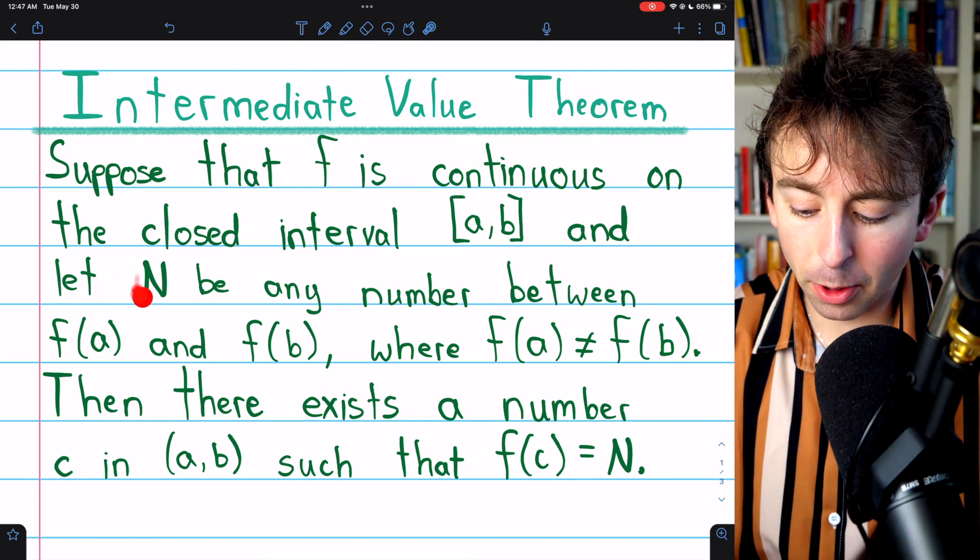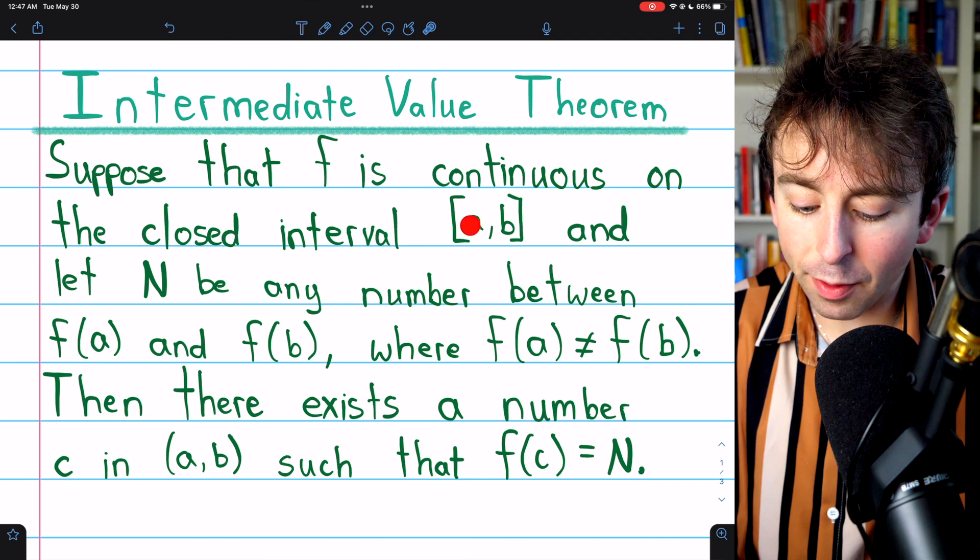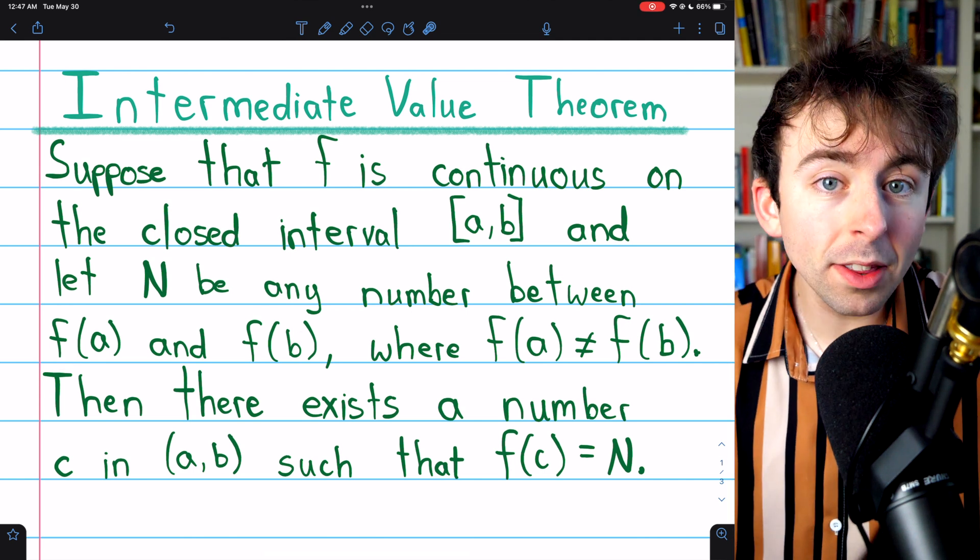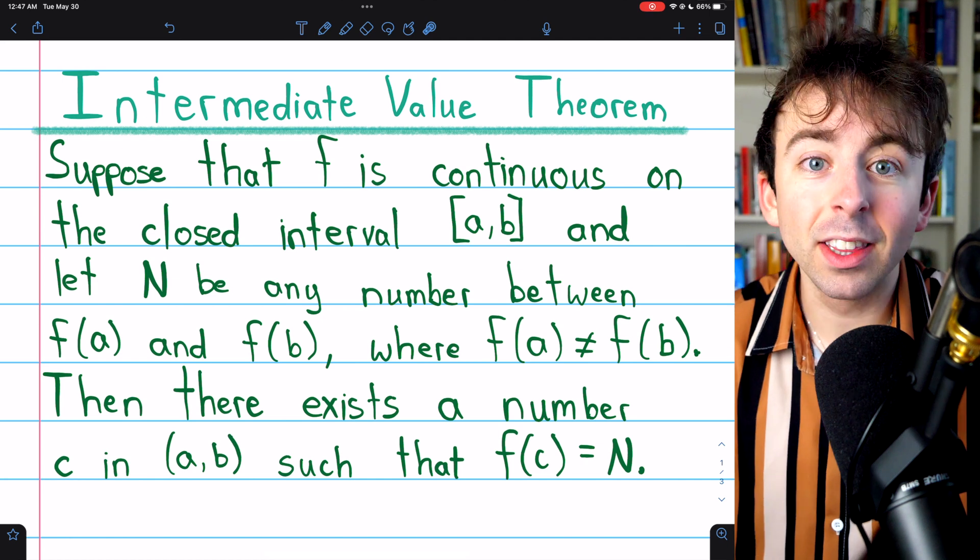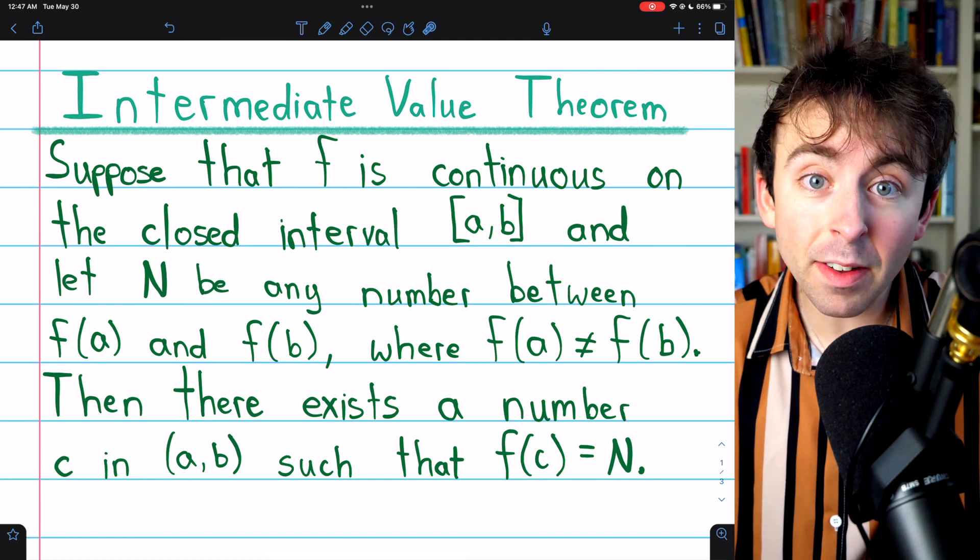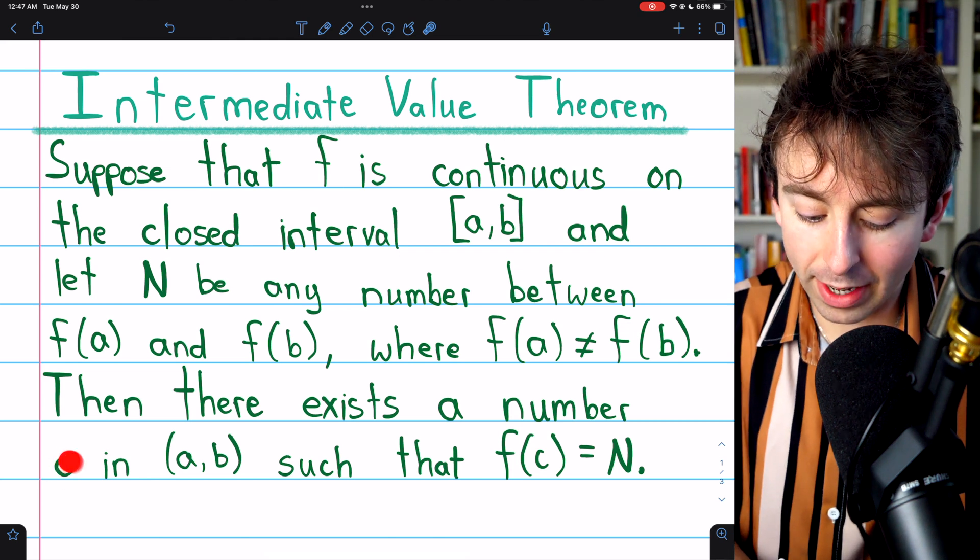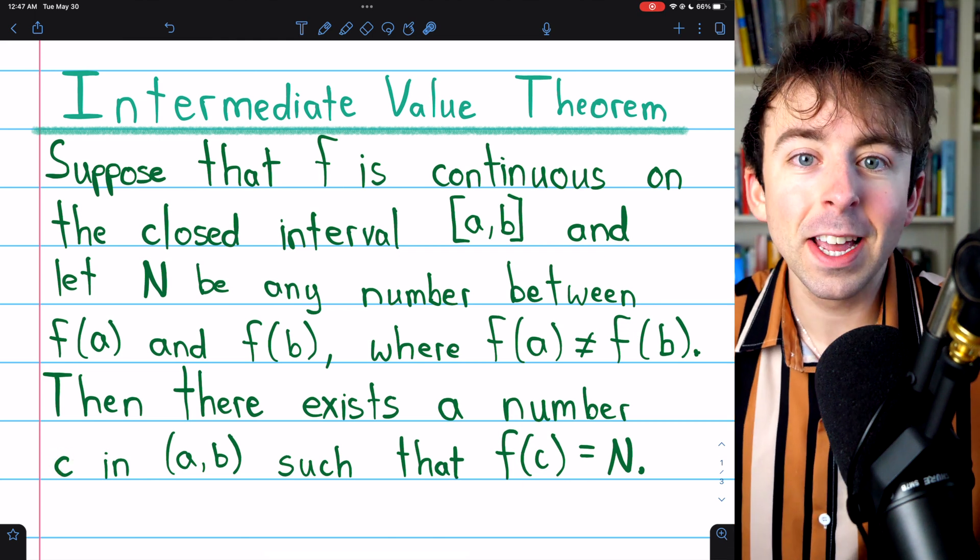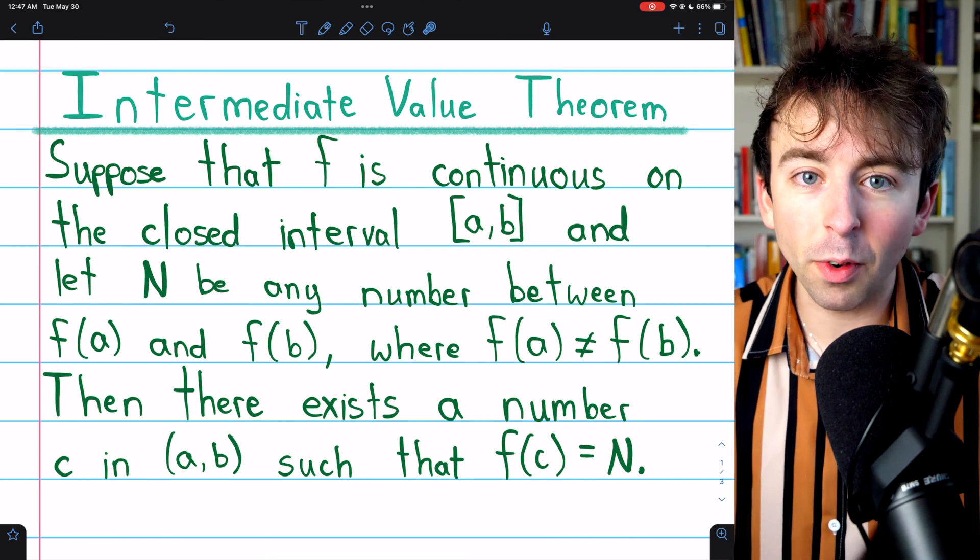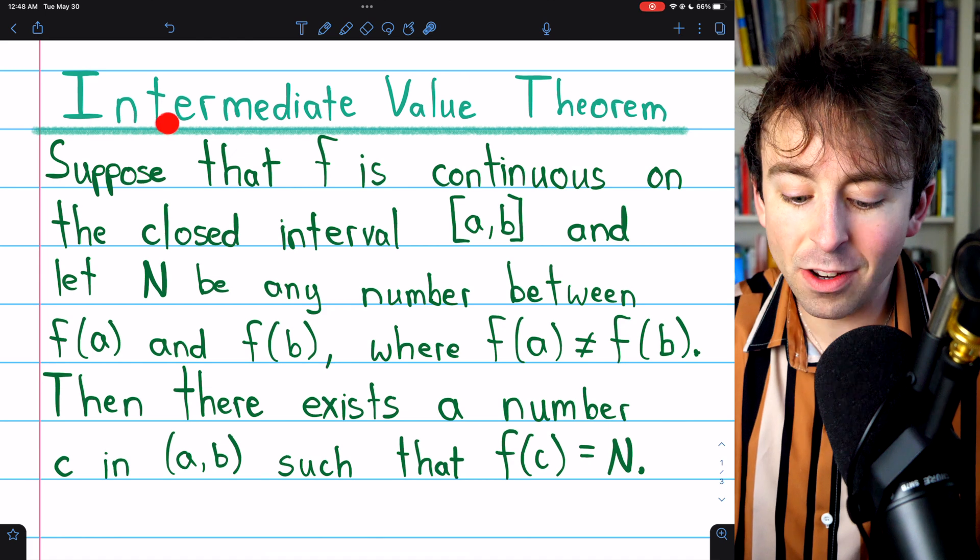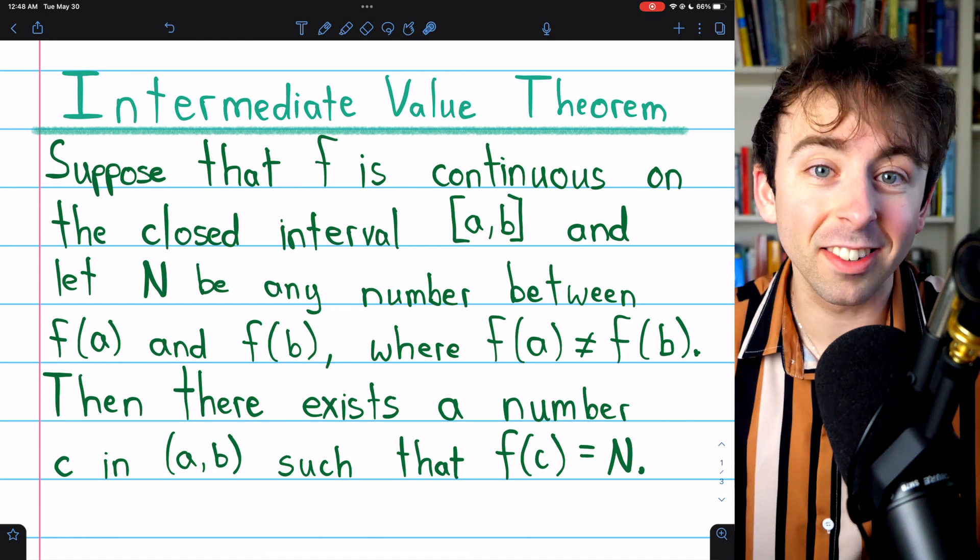Take note of how this number N is between f(a) and f(b). So it's just some number between the start and the end point. The function must take on any value that is between the starting and the ending point. There must be some point where the function takes on that value. A continuous function on a closed interval takes on all of its intermediate values at some point.